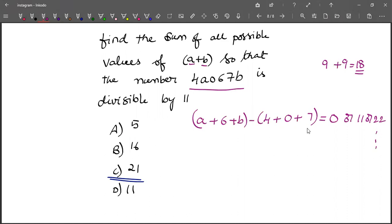So we need to find values such that a + b does not exceed 18. Okay, first, let's set it equal to 0. This gives a + b + 6 - 11 = 0, then a + b equals 5.